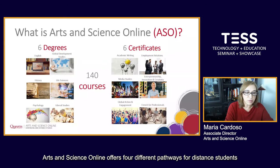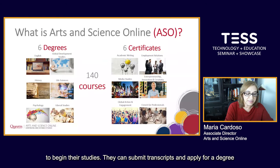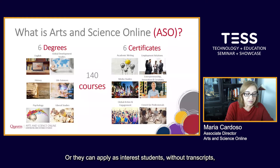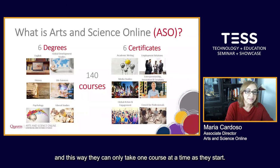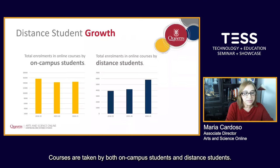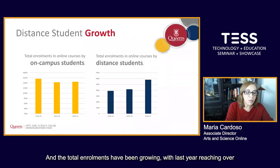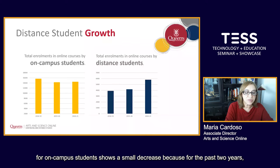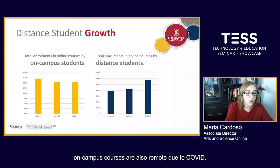Arts and Science Online offers four different pathways for distant students to begin their studies. They can submit transcripts and apply for a degree program, apply for a certificate program, or apply as a non-degree continuing student. Or they can apply as interest students without transcripts and this way they can take only one course at a time as they start. Courses are taken by both on-campus students and distant students, and total enrollment has been growing, with last year reaching over 20,000 enrollments. Although enrollment in online courses for on-campus students shows a small decrease — because for the past two years on-campus courses were also remote due to COVID — the distance student enrollment shows a steady increase.